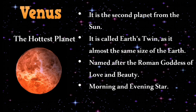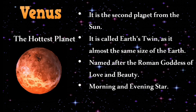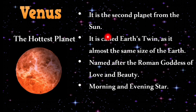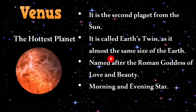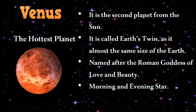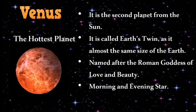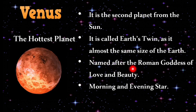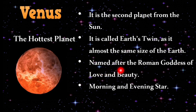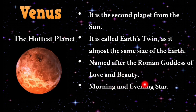Venus is the hottest planet and the second planet from the sun. It is called Earth's twin as it is almost the same size as Earth. It is named after the Roman goddess of love and beauty, and is also called the morning and evening star.